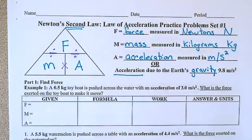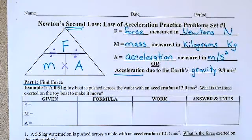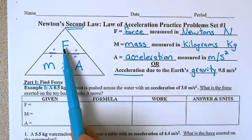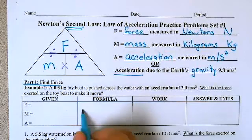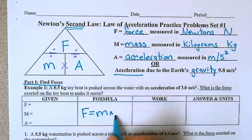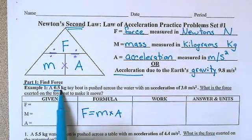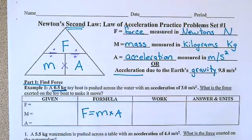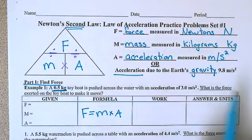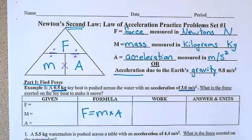So let's look at part one. Part one for this is finding force. The formula for part one is force equals mass times acceleration. For example one, it says a 0.5 kilogram toy boat is pushed across the water with an acceleration of three meters per second squared. What is the force exerted on the toy boat to make it move?